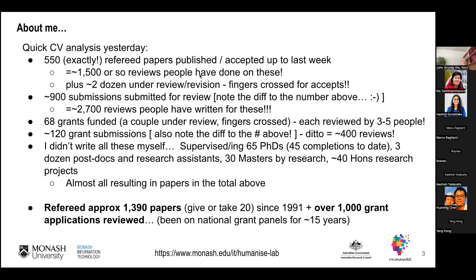I'll give you a quick rundown. Looking at my CV, I was curious how many papers I've refereed, but also how much refereeing I've caused the community. I've got exactly 550 refereed papers published or accepted at the moment. Multiply that by three — some papers are reviewed by two, some by four — that's about 1,500 reviews people have done on those published papers. I also have a share of rejections, around 900 papers submitted in total, meaning roughly two and a half to 3,000 reviews that people have done on my work.